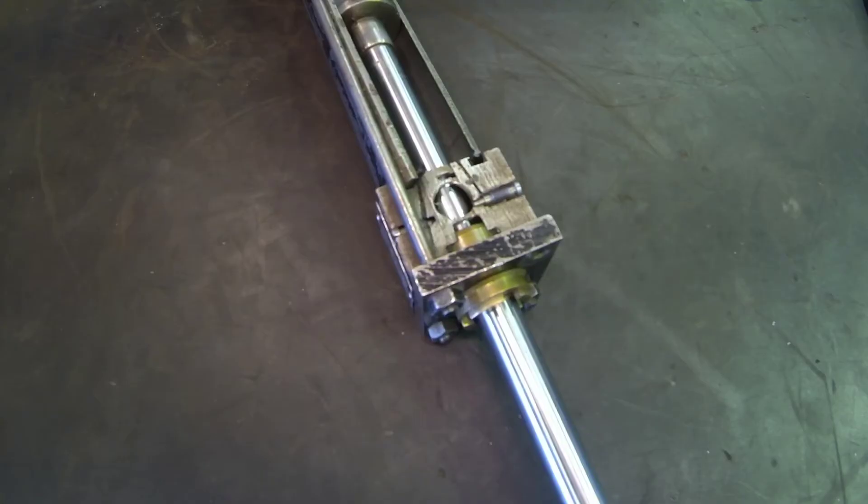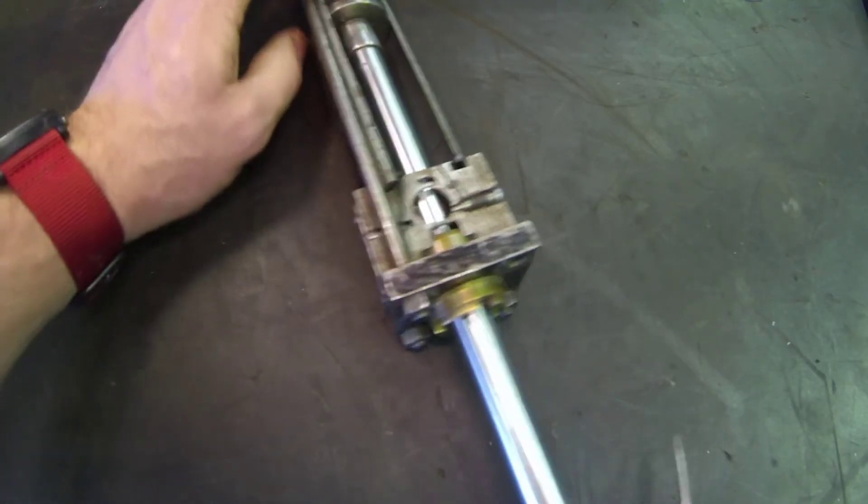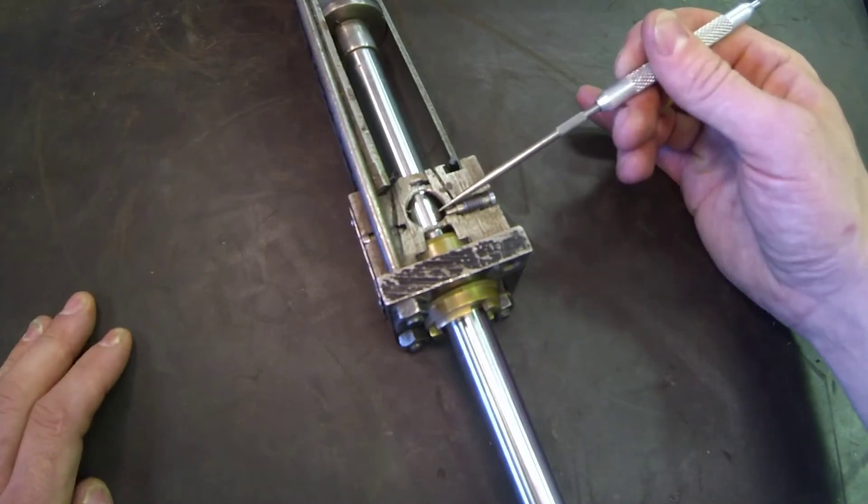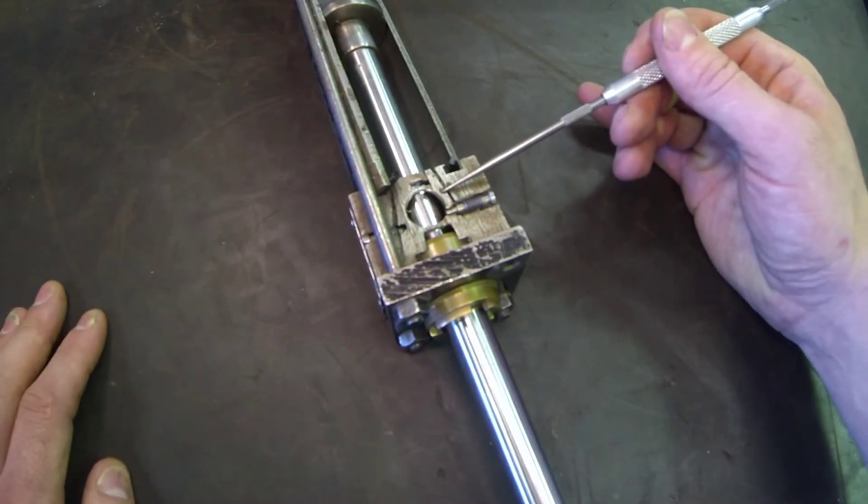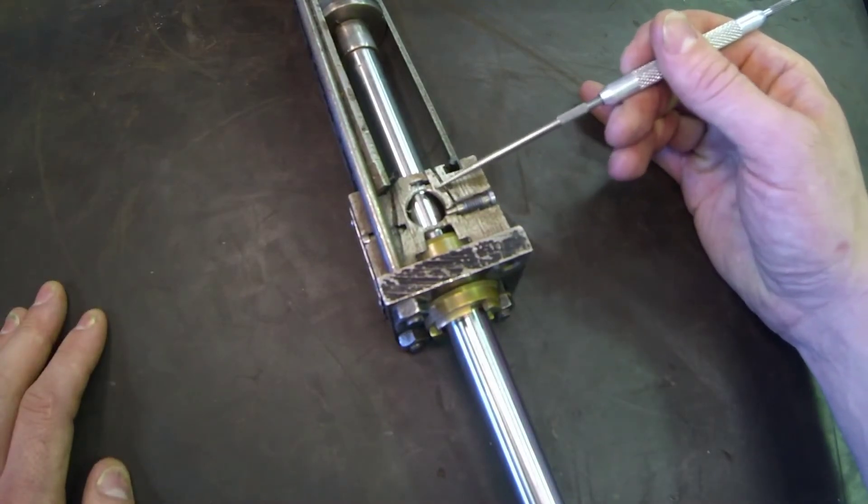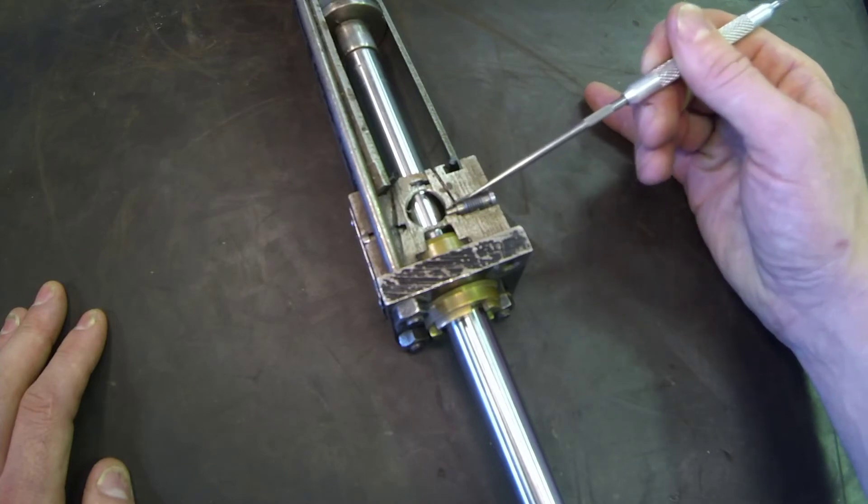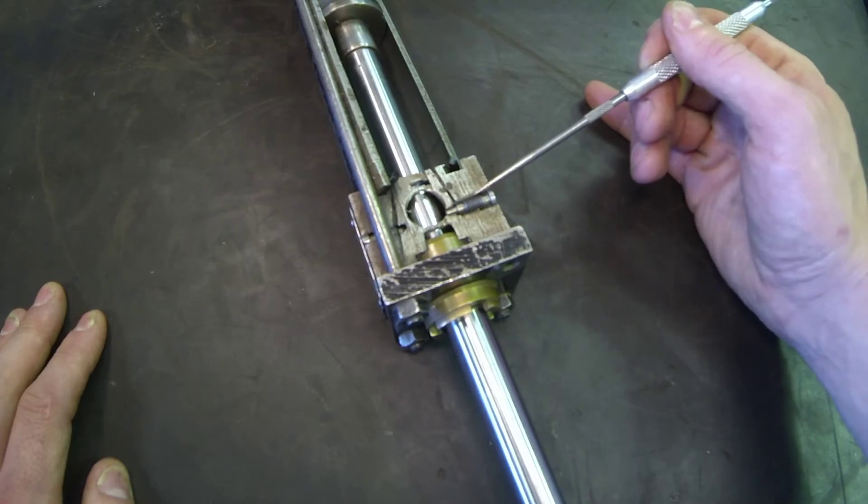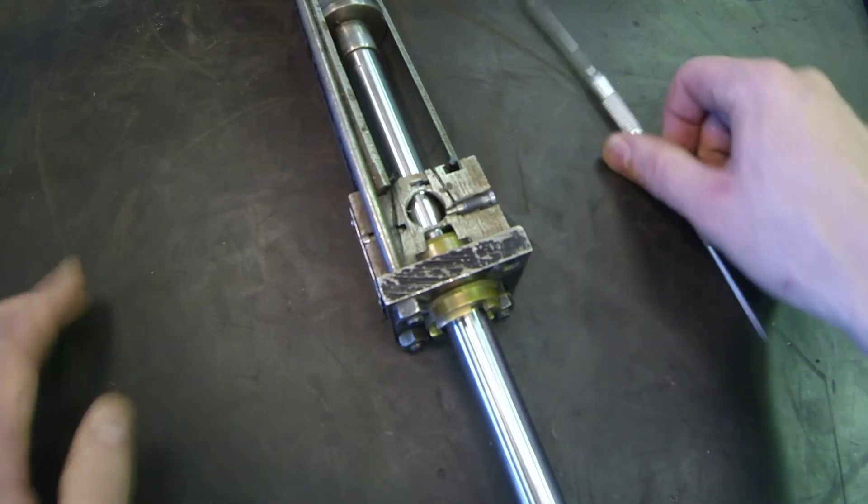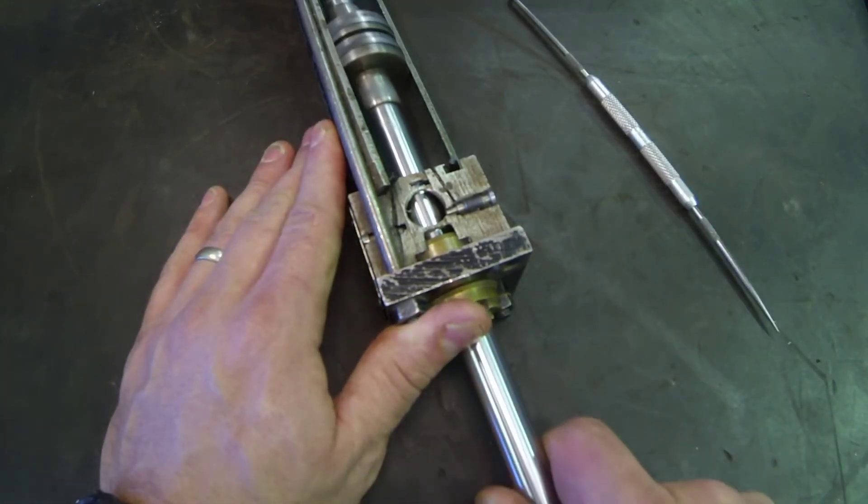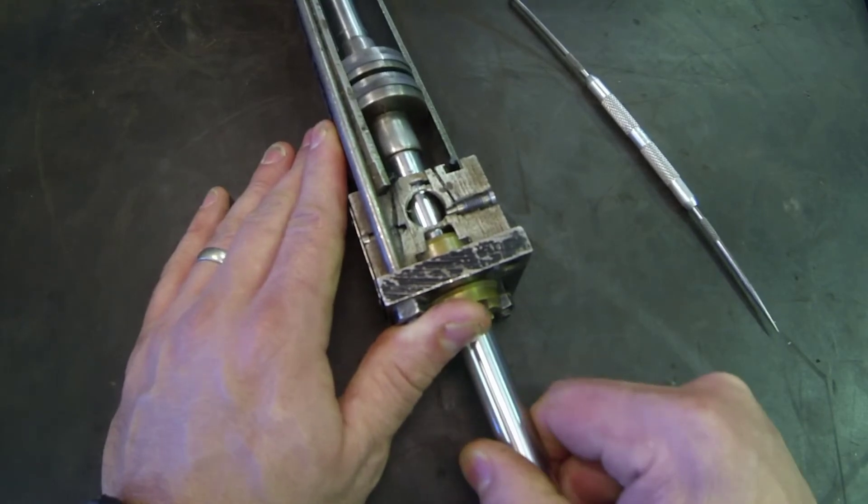What we can see on the end of this cylinder is what looks like a fairly complicated housing. What we're looking at is actually a control or variable orifice. That variable orifice is not for the speed of the cylinder through its entire stroke, but only at the end of its stroke, so we'll call it a cushion.